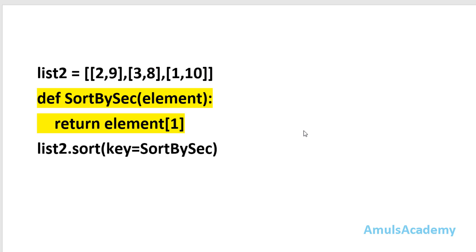So this is about the list method sort. As mentioned, this method is only applicable on lists; we can't use it on other iterables. To sort other iterables we can use another built-in function called sorted, which we will discuss in the next tutorial. Thank you for watching this video — I will meet you in the next class. Till then, take care.